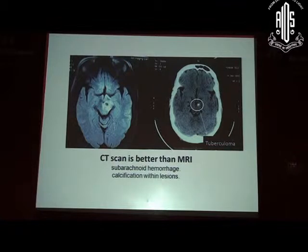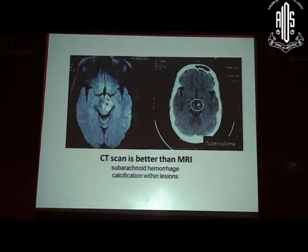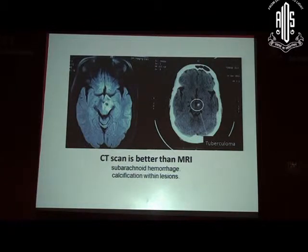You have a lesion on the left with a lot of perilesional edema on the MRI, but when you do the CT you can see calcification within the lesion. So you are essentially looking for tuberculomas or old cysticercosis — this kind of lesion turned out to be a tuberculoma. Calcification within lesions is better picked up on CT.